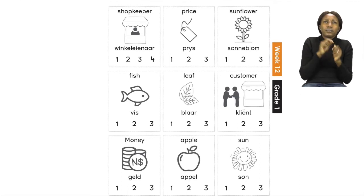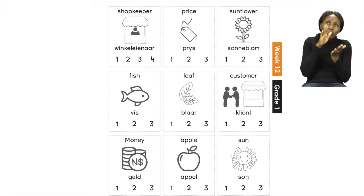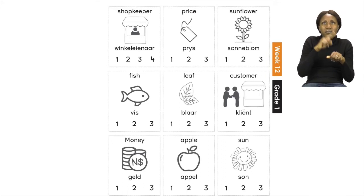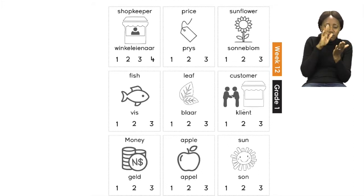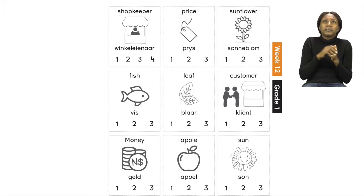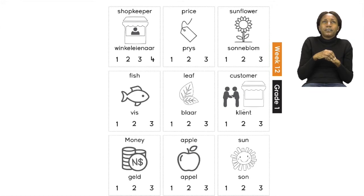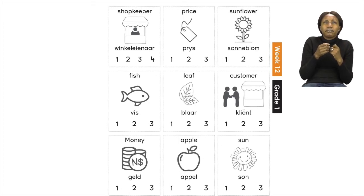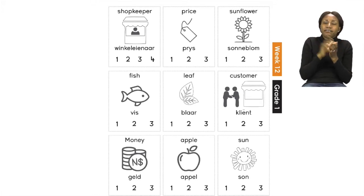We're going to say shopkeeper slowly, clapping our hands as we go. Shopkeeper. Now I want you to count how many times we clapped our hands. Shopkeeper. How many times did we clap? If you say once, that's not correct. If you say three times for the word shopkeeper, well done! I'd like you to please circle the number three.